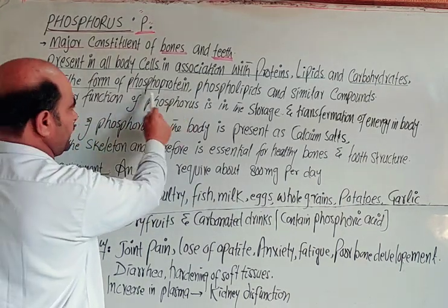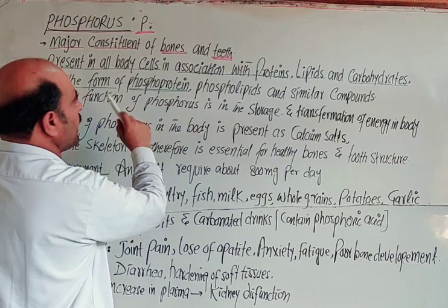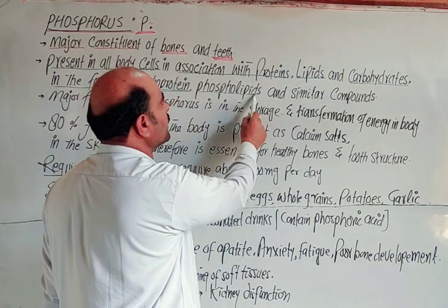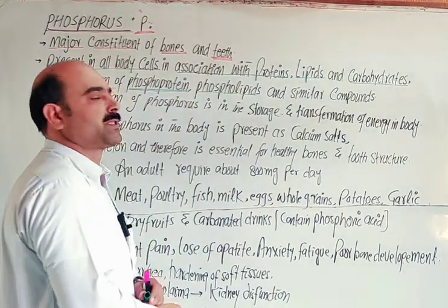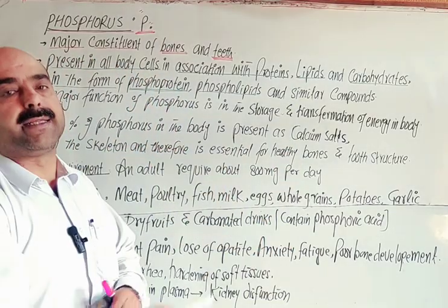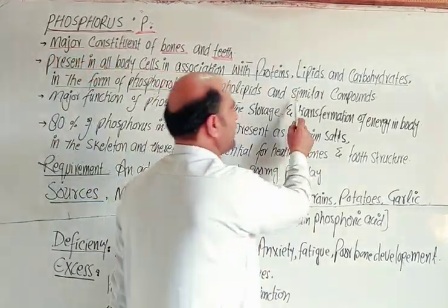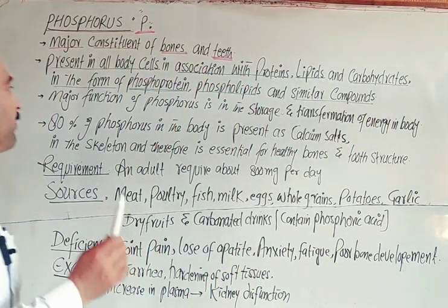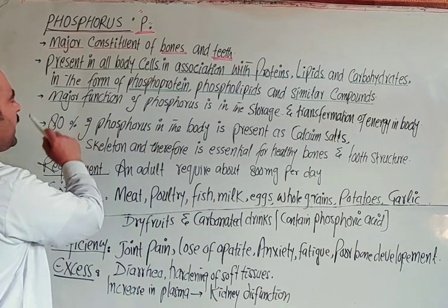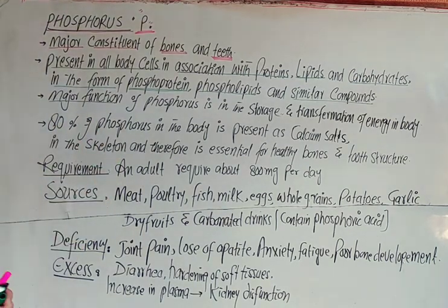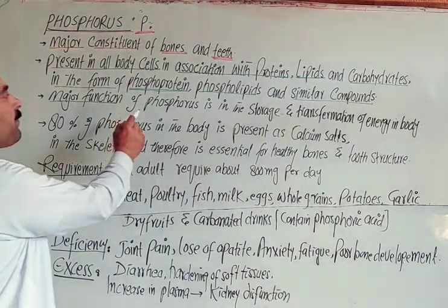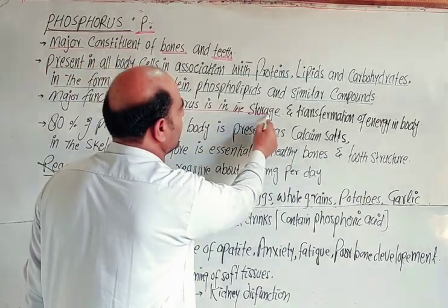Phosphorus is combined with proteins, lipids, and carbohydrates, forming various compounds such as phosphoproteins, phospholipids, and carbohydrate-phosphate compounds. The major function of phosphorus is also in energy storage.